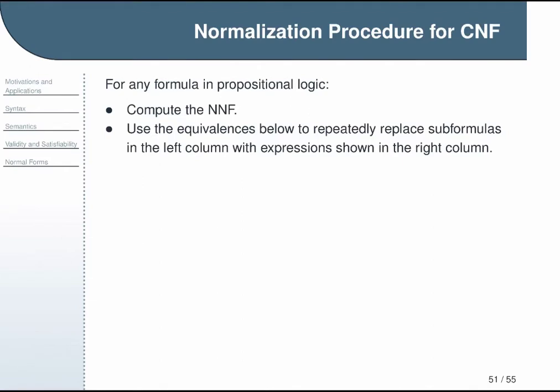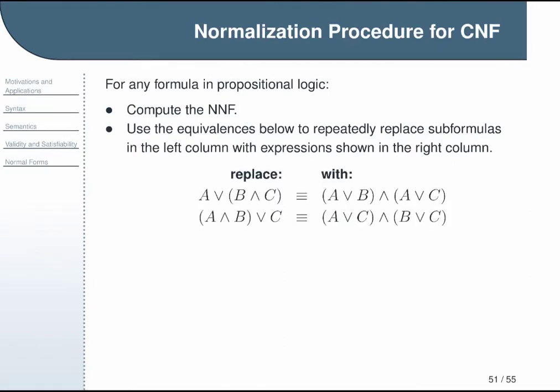Second, we'll refer again to a table of equivalences that you can use to repeatedly replace subformulas that are not in the right form with ones that are. The first set of equivalences you need are the ones that express the distributive laws here. Then after that, we can simplify any conjunctions with contradictions by replacing them with the constant false. Likewise, we can simplify any disjunctions with contradictions by simply dropping the contradictions. And then we have analogous simplifications that we can do with a constant true whenever it appears in conjunctions or disjunctions.